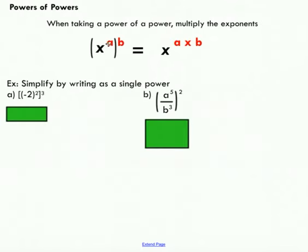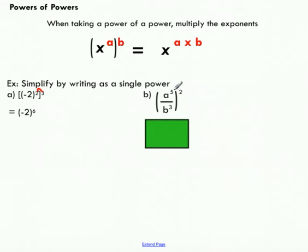The third exponent law is the power of a power. If you've got x to the power of a in brackets raised to the power of b, you multiply the two exponents. In the first example, negative 2 to the power of 2 is raised to the power of 3, so we multiply 2 times 3 to get an exponent of 6. In part B with fractions, the outside exponent applies to both top and bottom, so I multiply 5 times 2 and 3 times 2, giving a to the power of 10 over b to the power of 6.